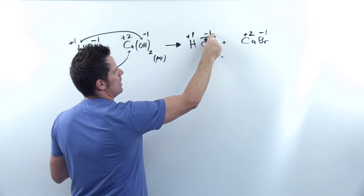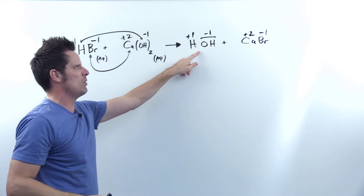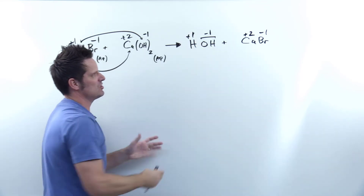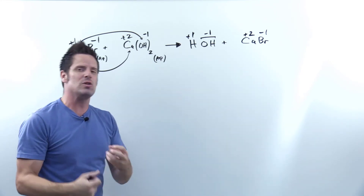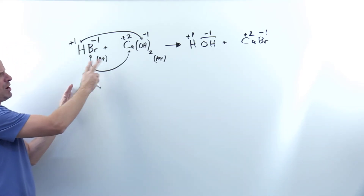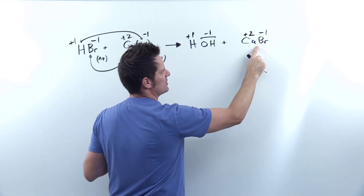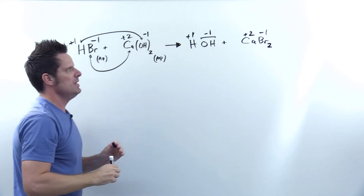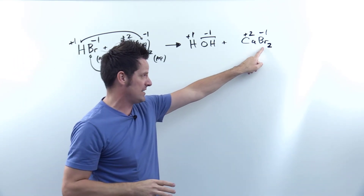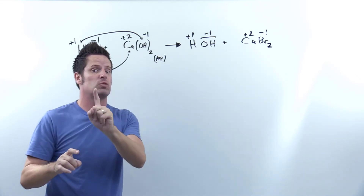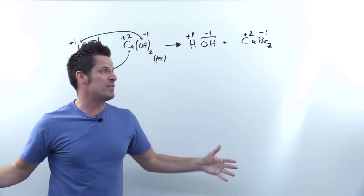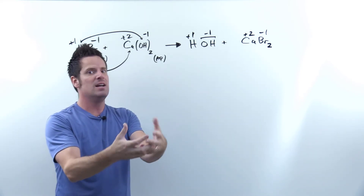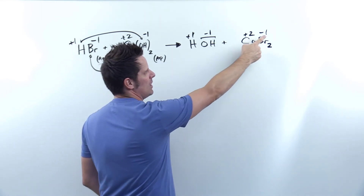Now we bring these charge numbers down to lay down subscripts. The +1 on H gives a subscript of 1 (implied, not written), and the −1 on OH gives a subscript of 1, so HOH has no extra subscripts — just HOH or H₂O. For calcium bromide: calcium gets an implied subscript of 1 (not written), and the bromine gets a subscript of 2, giving CaBr₂. This makes sense because each Br has a −1 charge, and you need two bromides to cancel out calcium's +2 charge.